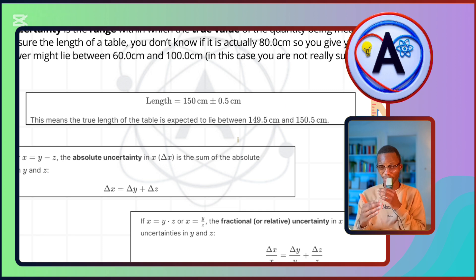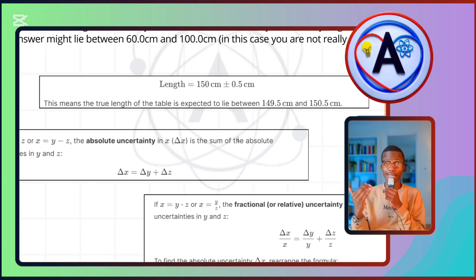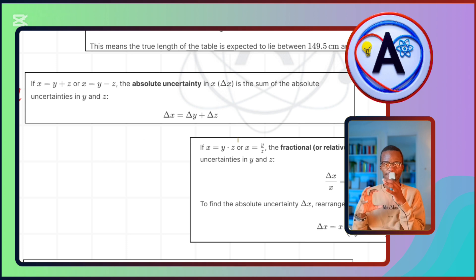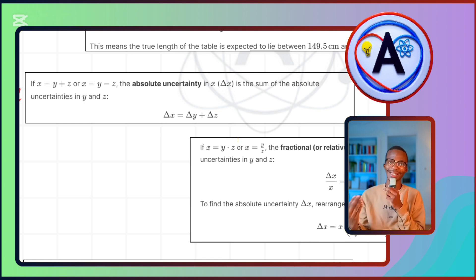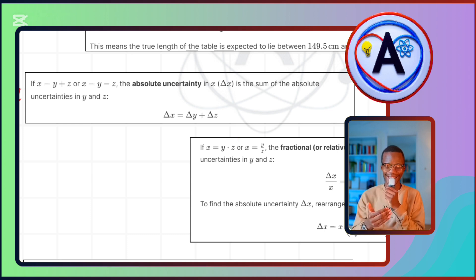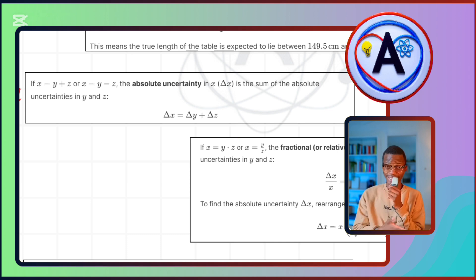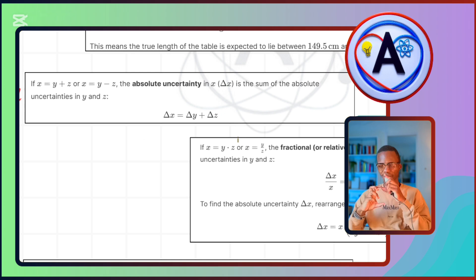Here are some rules you must be aware of. If x = y + z or x = y − z, the absolute uncertainty in x is just the sum of the absolute uncertainties in y and z: Δx = Δy + Δz. If you're adding or subtracting quantities, you simply add the absolute uncertainties — because you're uncertain about y by one amount and uncertain about z by another, so the total uncertainty in the output is their sum.